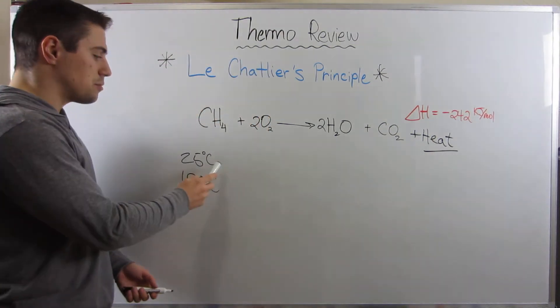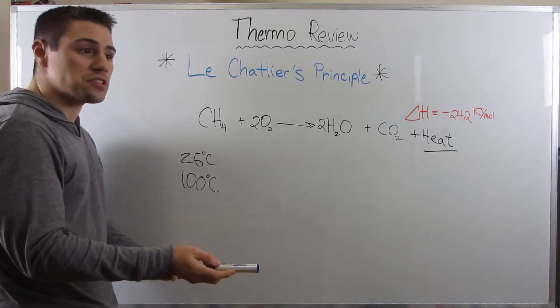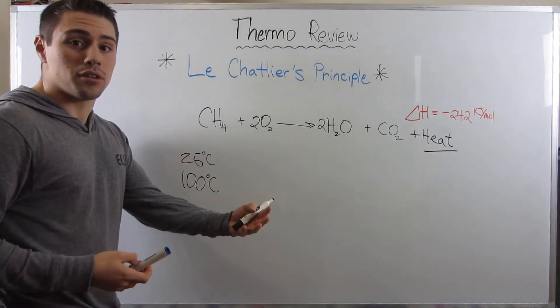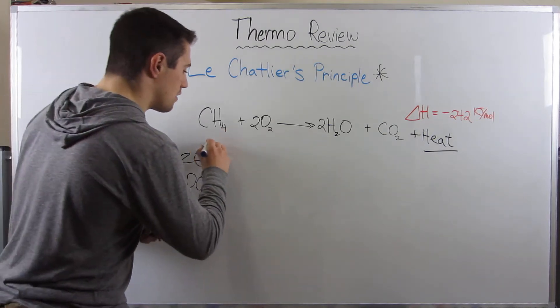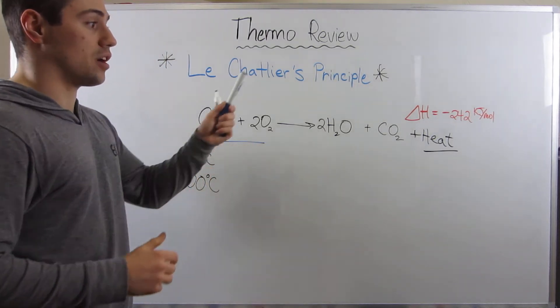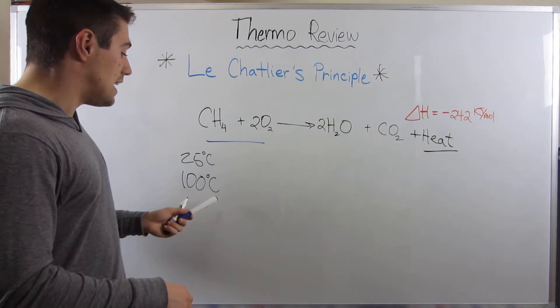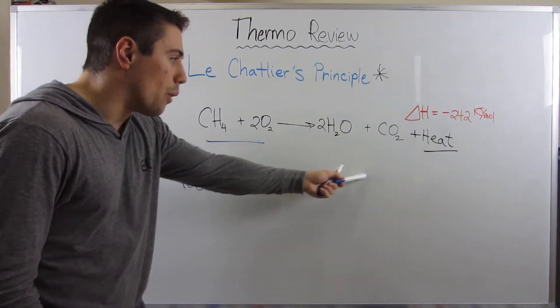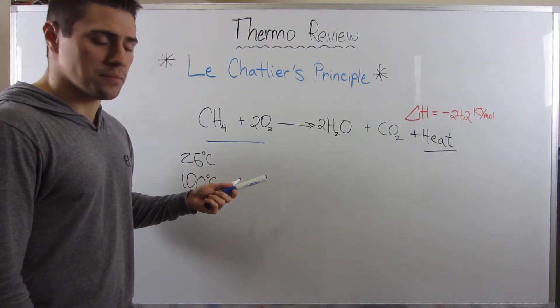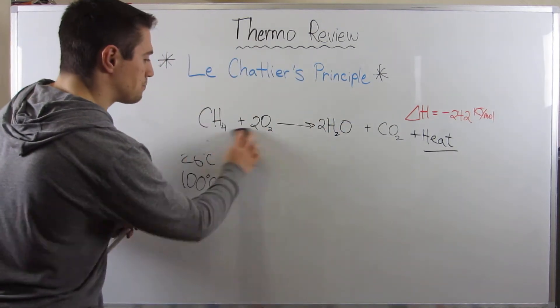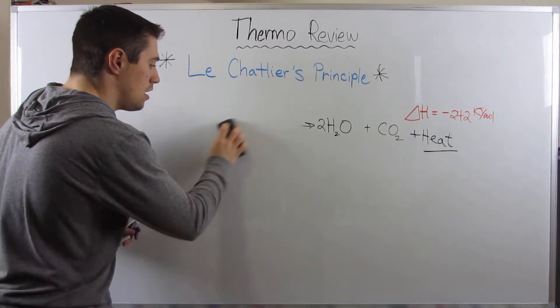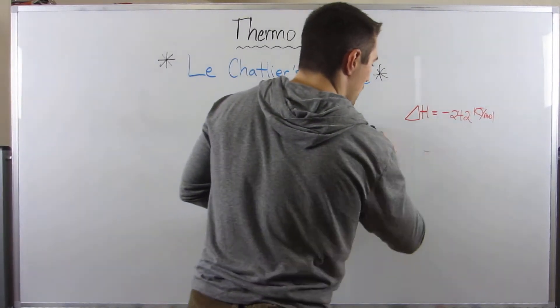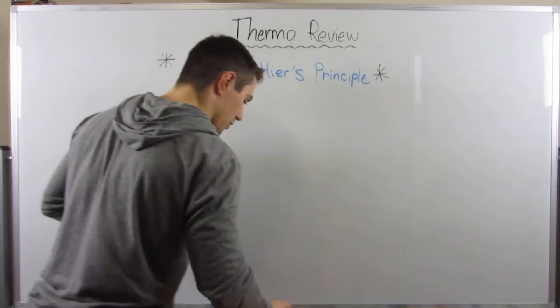Someone might ask you the question, once this temperature goes from 25 to 100 degrees Celsius, which side of the equilibrium will the system shift towards? And you would say this one, because we saw heat's on the product side, we're adding in extra heat. So we're going to shift away from where heat is. See how that works. Let me do one more quick example because I got plenty of examples for you guys on the thermodynamic worksheet and I know you're going to crush it over there.